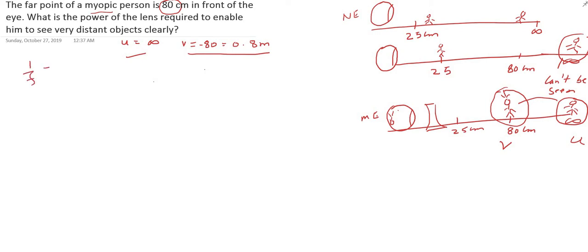Let us first find the focal length so that we can then find the power. Using the lens formula: 1/f = 1/v − 1/u, which equals 1/(−0.8) minus 1/(−infinity). So 1/f comes out to be 1/(−0.8).